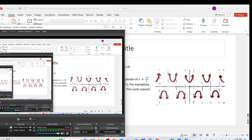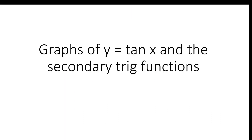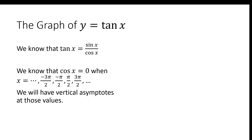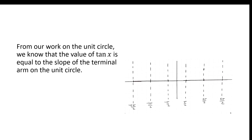In this video, we're going to talk about how to graph y equals tan x as well as the secondary trig functions. To graph y equals tan x, let's think about what we already know. We know that tan x is equal to sin x over cos x, and we know that cos x equals 0 when x is negative 3 pi over 2, negative pi over 2, pi over 2, 3 pi over 2, etc. There's an infinite number of values in both directions. So we're going to have vertical asymptotes at those values because the denominator equals 0. So we draw our vertical asymptotes in.